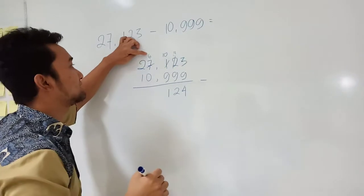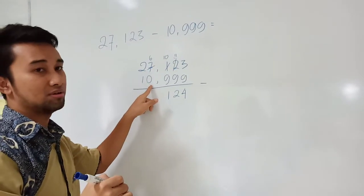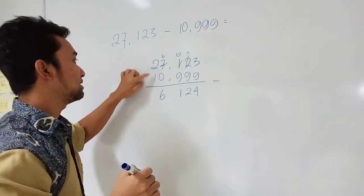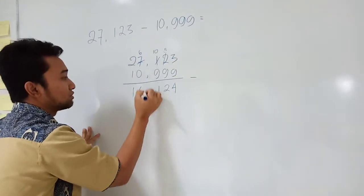Good. Now 6 minus 0. Is it possible to minus? Yes. Directly now. 2 minus 1 is 1. So you just put the comma here.